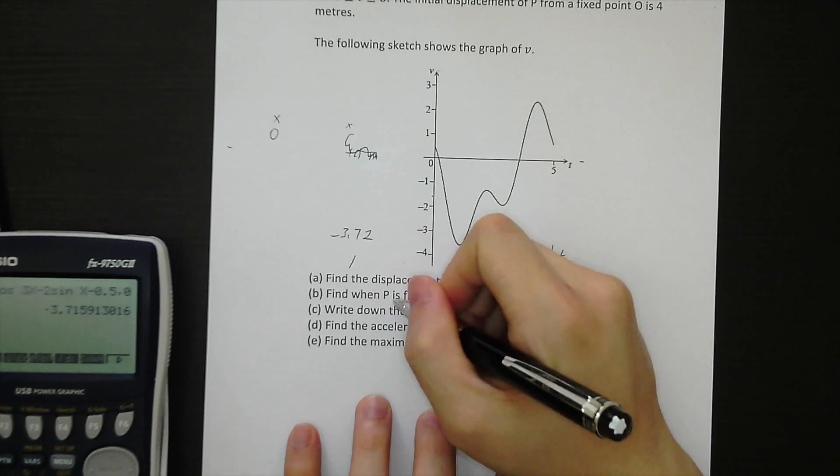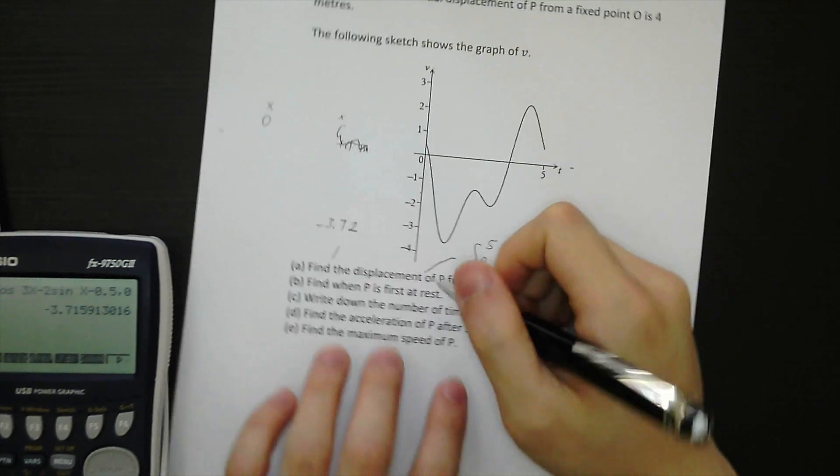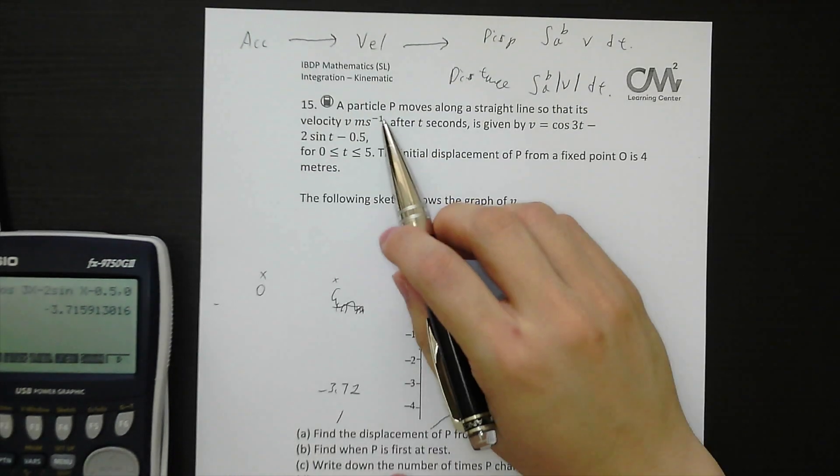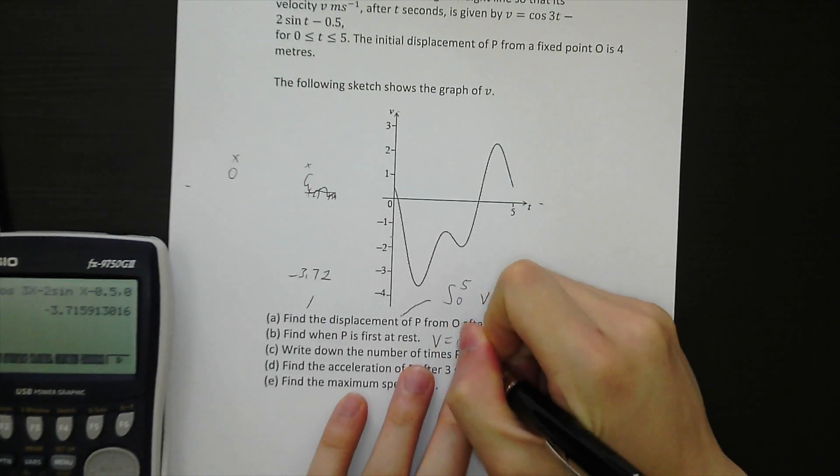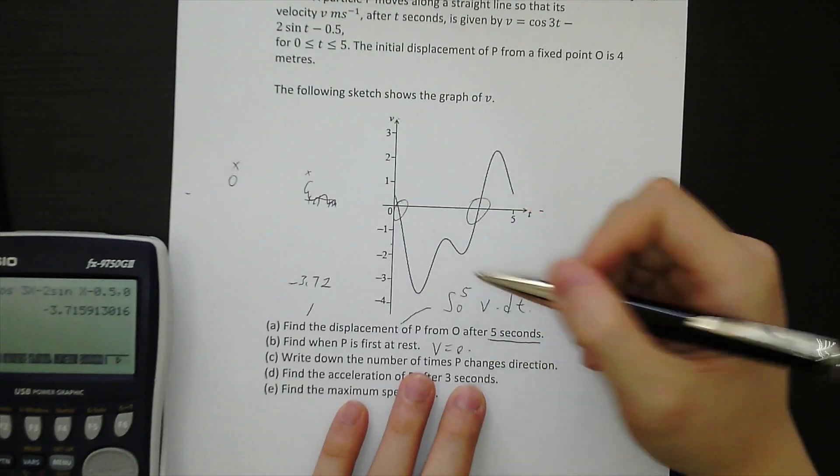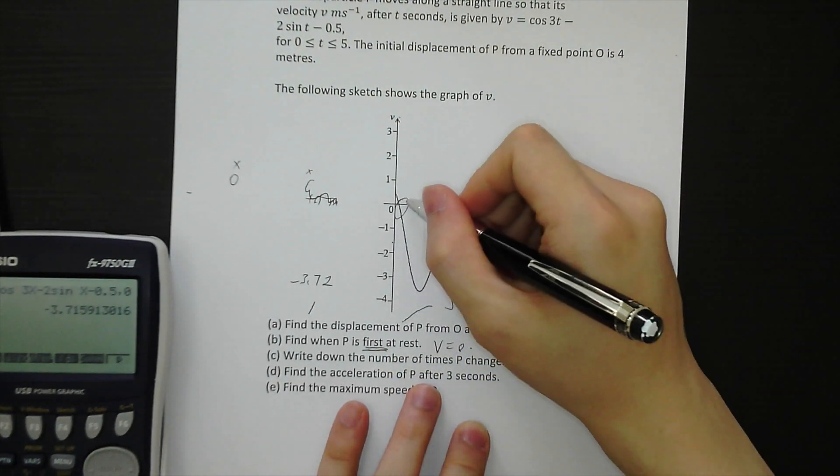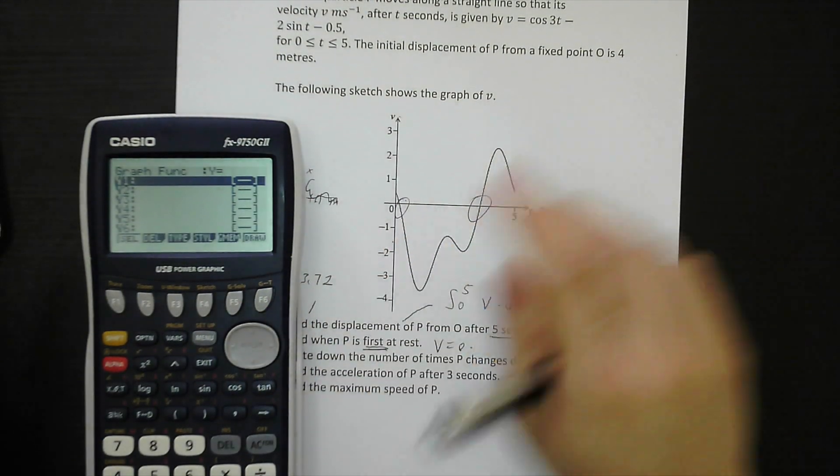Part B, find when P is first at rest. So first at rest means the particle P is not moving. It's at rest. So that means velocity equals 0. From the graph here, velocity equals 0, there are two points. This point and this point. But first at rest, let's find the T value at this point.